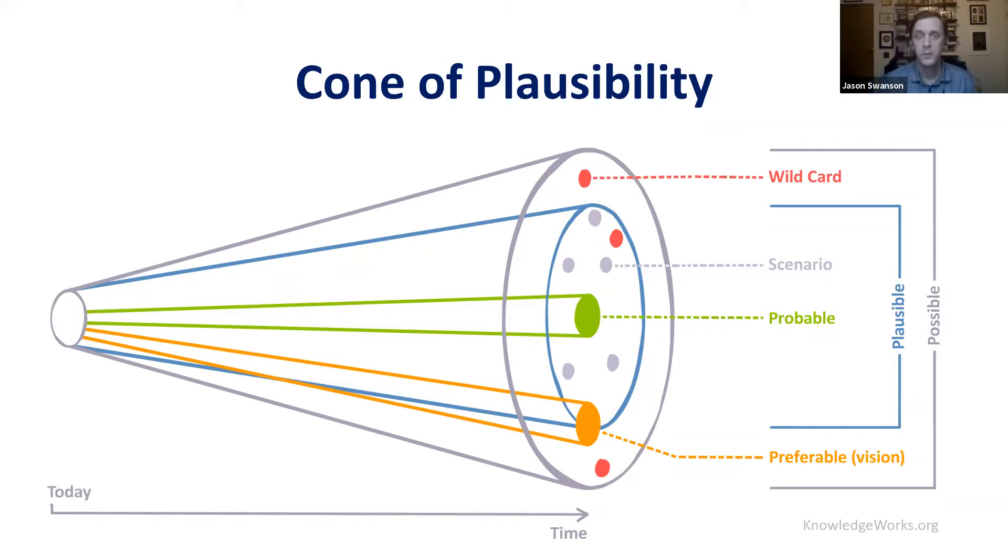What you see here on screen is something called the Cone of Plausibility. It's not really a foresight method, but it is a fantastic foresight teaching tool. For our purposes, it describes this idea that the future is many, but not one.